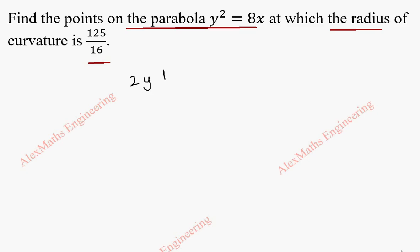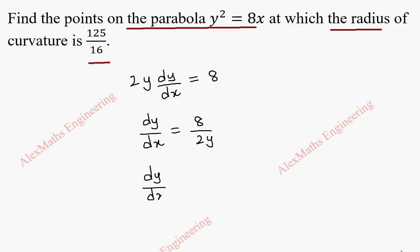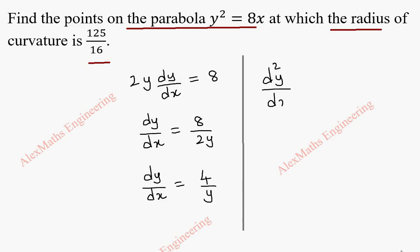This gives 2y dy/dx equal to 8, and from this dy/dx is 8 by 2y. After simplification, dy/dx equals 4 by y. For the second differentiation, d²y/dx² — since 4 is a constant, we keep it as is.